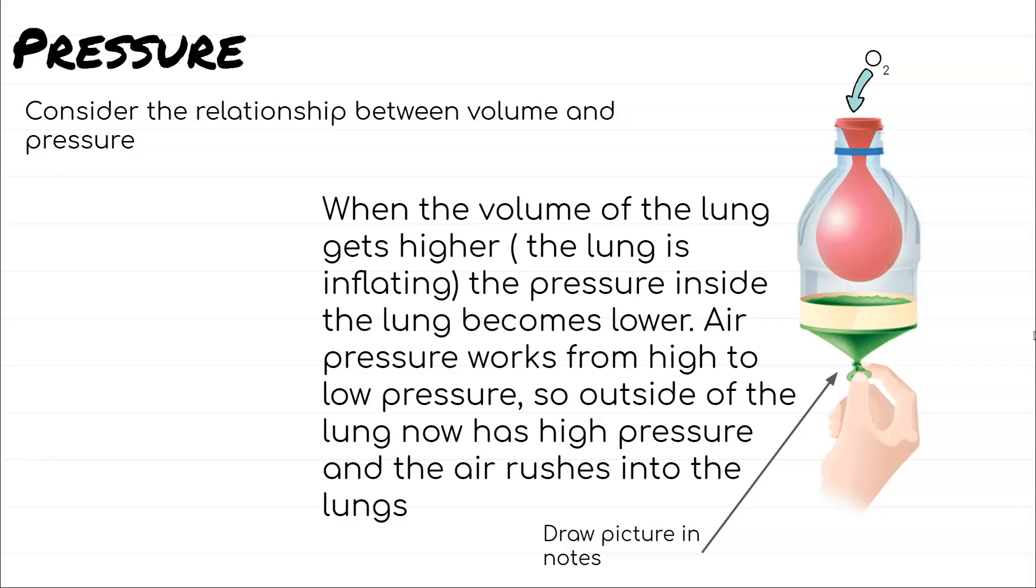When the volume of the lung gets higher, so that means when we are actually trying to inflate our lung, the pressure inside our lung is low because pressure works on a high to low concentration. You have to think about it as a concentration gradient. Oxygen is outside, the pressure is high pushing on us trying to get oxygen into our body. So the oxygen pressure is high outside of our body and low on the inside. Outside of the lung has high pressure and then with that high pressure air rushes into our lungs.